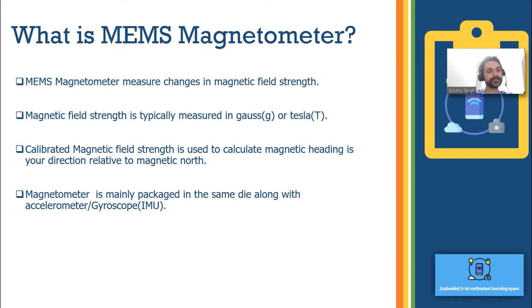The calibrated magnetic field strength is used to calculate the magnetic heading. Magnetic heading is the key use case that we use in all smartphones. You will be seeing one application called e-compass. So we'll talk about it in detail.